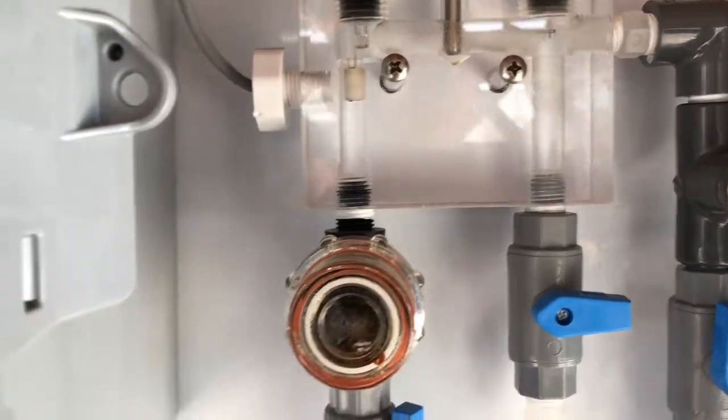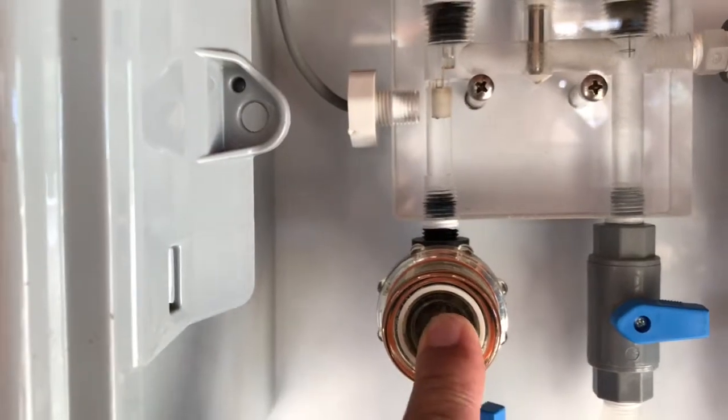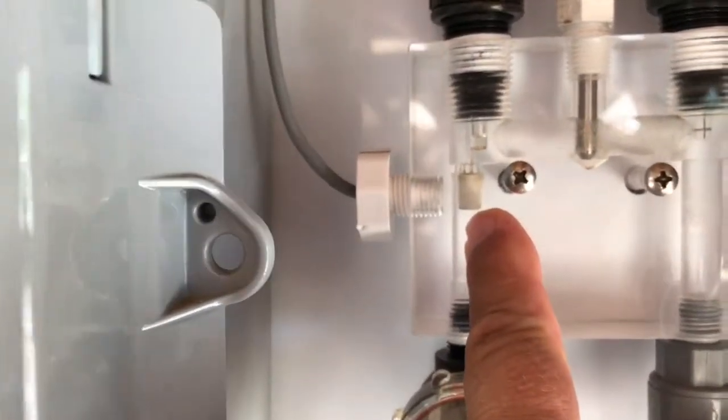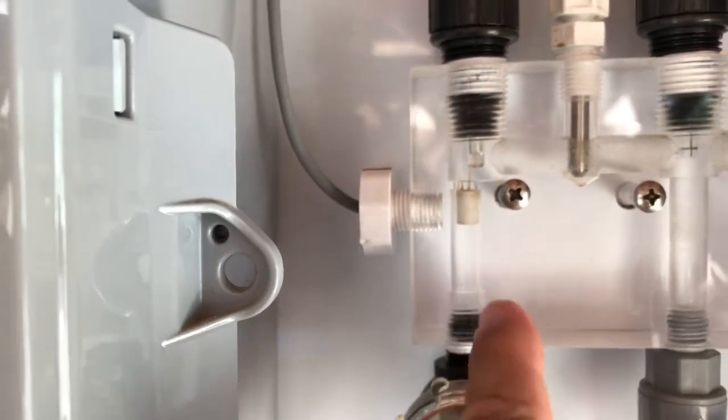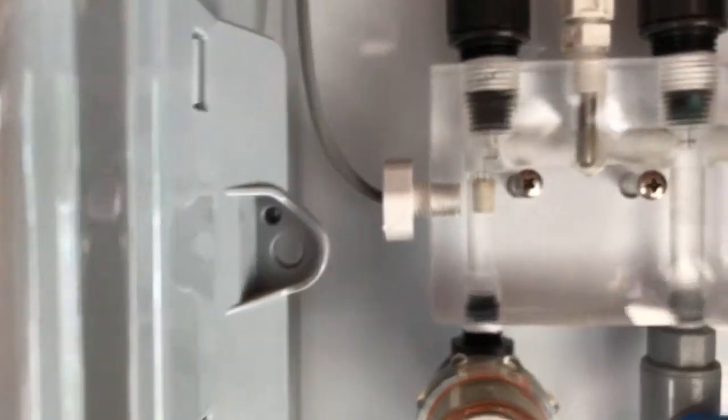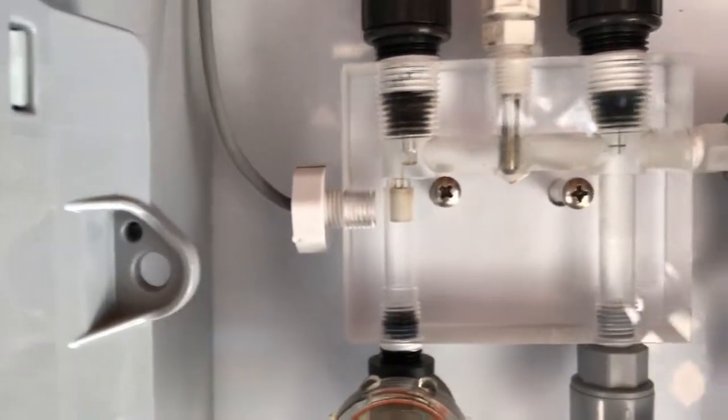One, before you put this filter on, make sure that you have the flow cell magnet which is right there. Make sure it's in this chamber before you thread this on and attach the flow cell to the backboard.